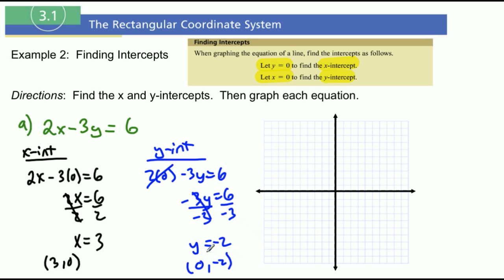Alright, well if you plot both of those points, 3, 0 - 1, 2, 3. And 0, negative 2 - 0, then negative 2.